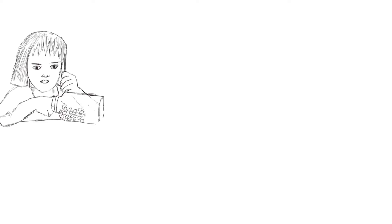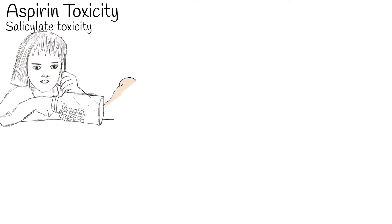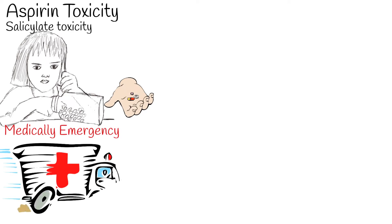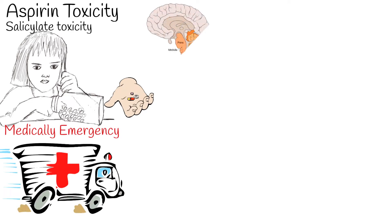Sometimes a child can ingest adult aspirin, causing salicylate toxicity, which is a medical emergency. Aspirin poisoning can also happen among adults because aspirin is widely available over-the-counter and is used for pain management, antipyretic, and antithrombotic properties.